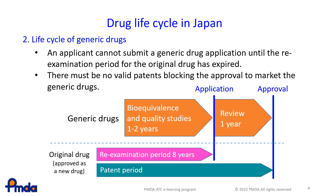To summarise, once the re-examination period expires, other drug companies can apply for marketing approval of a generic version of a drug. Once the patents expire, a generic drug can be approved.